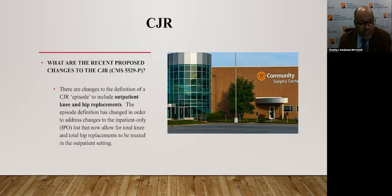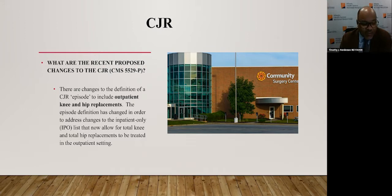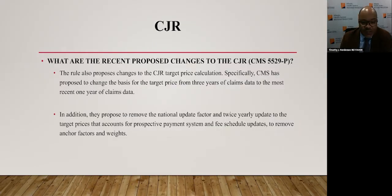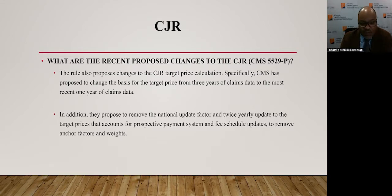There are changes to the definition of the CJR episode to include outpatient knee and hip replacements, addressing the inpatient-only list changes that now allow TKR and THR to be treated in the outpatient setting. The rule also proposes changes to the CJR target price calculation — specifically, CMS has proposed to change the basis for the target price from three years of claims data to the most recent one-year claims data. In addition, they propose to remove the national update factor and twice-yearly updates to target prices, and to remove anchor factors and weights.